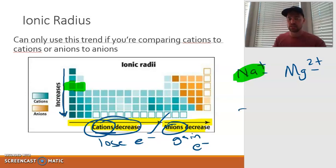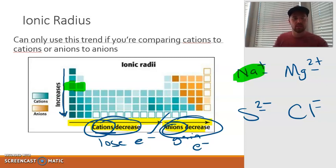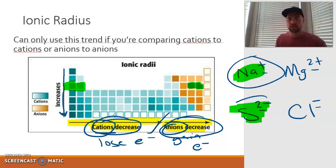Similarly, if I were to ask you to compare the sulfide ion compared to the chloride ion, they're both anions. And so therefore, I can use this trend. I would see that the smaller ion would be more to the right. So if I compare these two, sulfur is larger because chlorine is more to the right. Chlorine is about here. Sulfur is here. But I could not use this trend if I wanted to compare the size of the sodium ion compared to the size of the sulfide ion. To do that, I would have to look at the electron configurations and see how all the electrons are dispersed.